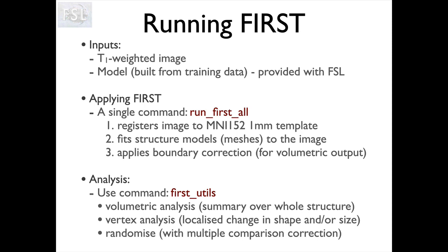If what you want is a labeled image where the different subcortical structures are labeled in a voxel-wise fashion, that's all you need to do. If you want other analyses — such as analyzing the volume as a single number for a structure and plugging that into a statistical package like SPSS — that's possible using a tool called first_utils. First_utils is also what would be used to create the vertex analysis, which looks specifically at changes in shape and size, and then you need randomize to do the associated statistics.